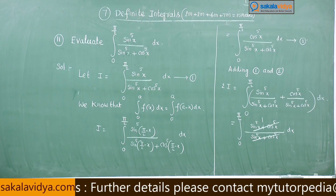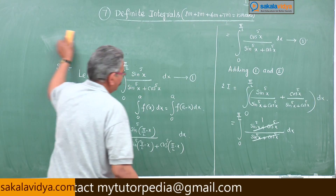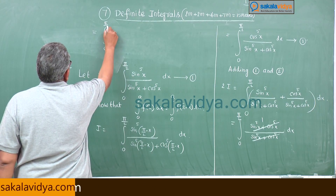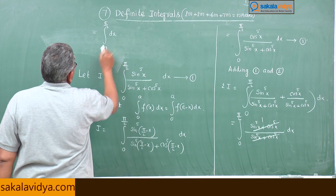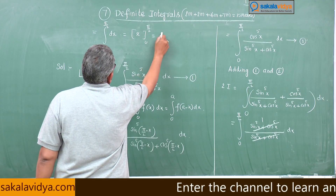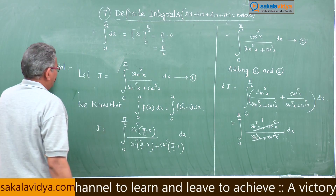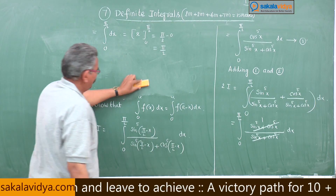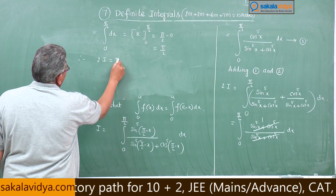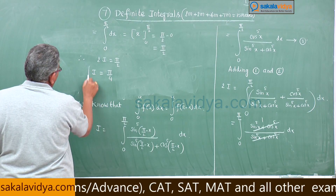So 2I equals the integral from 0 to π/2 of dx, which equals [x] from 0 to π/2, giving π/2 - 0 = π/2. Therefore 2I = π/2, so I = π/4. That is the required answer.